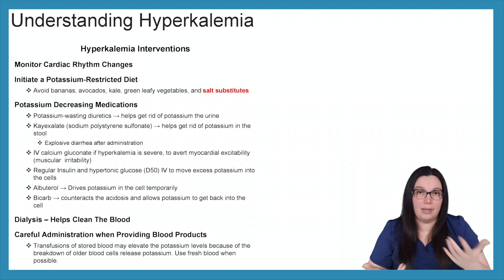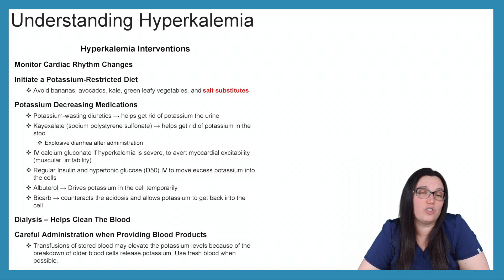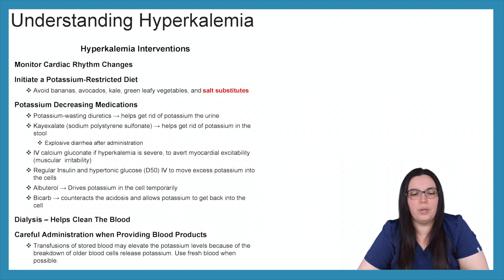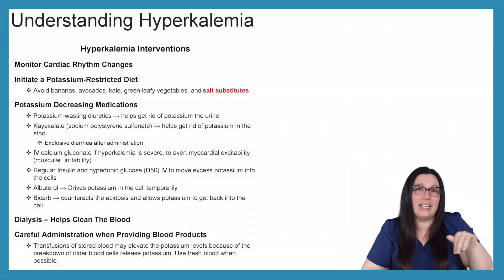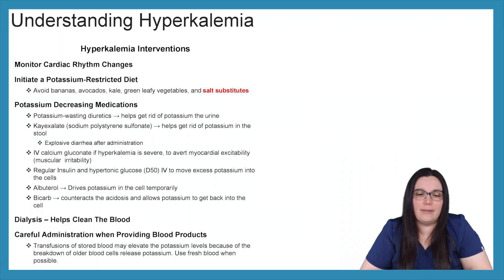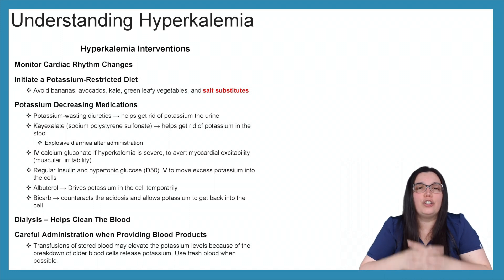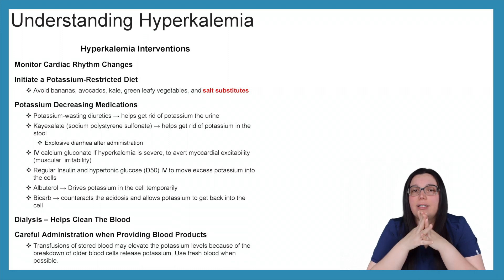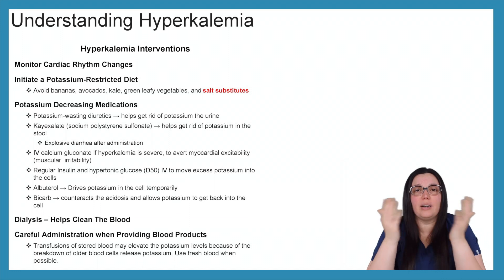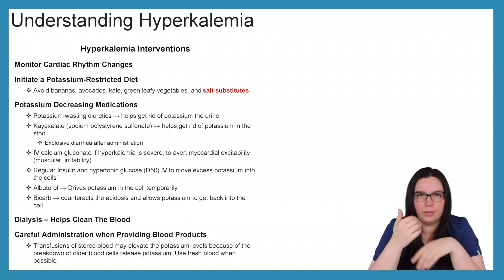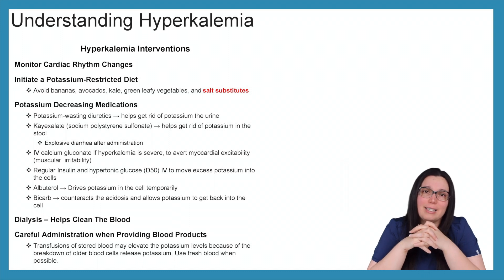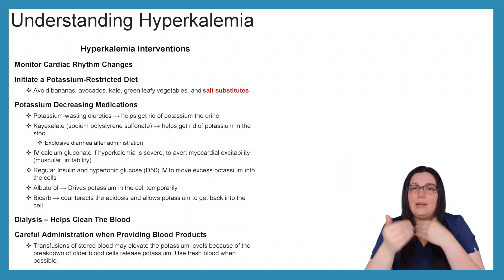Dialysis can help clean the blood — if the patient's kidneys are not working appropriately and we're unable to excrete potassium, dialysis could be an option. Lastly, we want to be very careful with the administration of blood products. When it comes to stored blood transfusions — not fresh blood transfusions — they can elevate potassium levels because of the breakdown of older cells. As cells become damaged and break apart, the potassium inside comes out into the blood product. It's best to use fresh blood as opposed to stored blood, as there is less likelihood of elevated potassium.